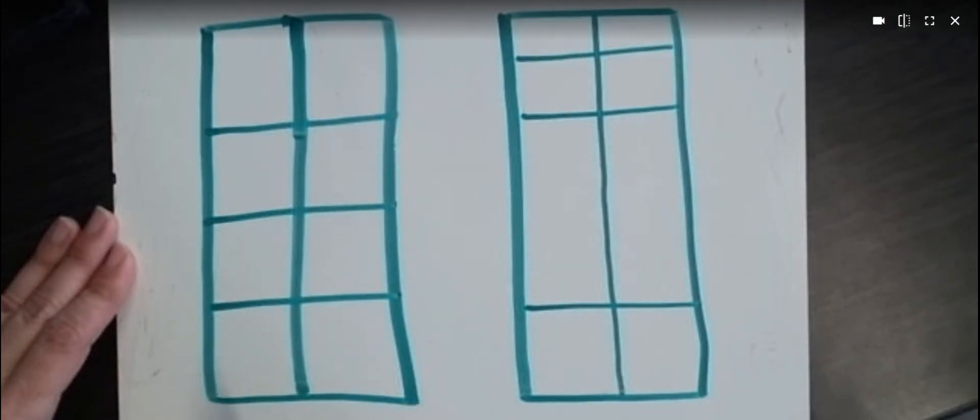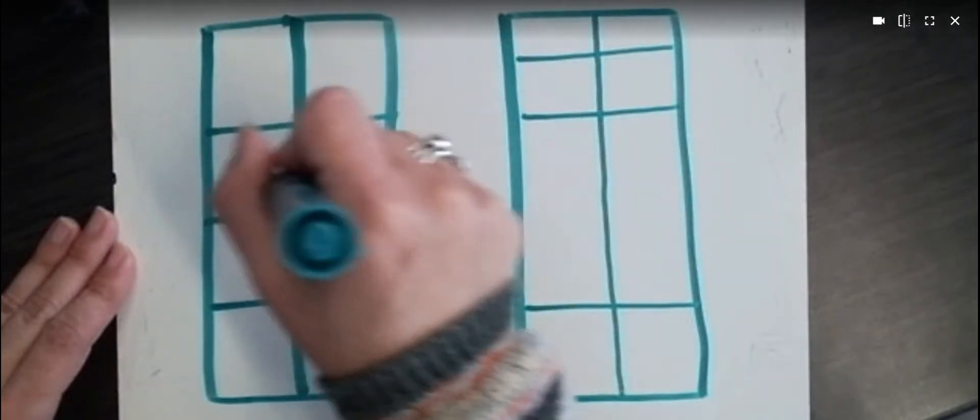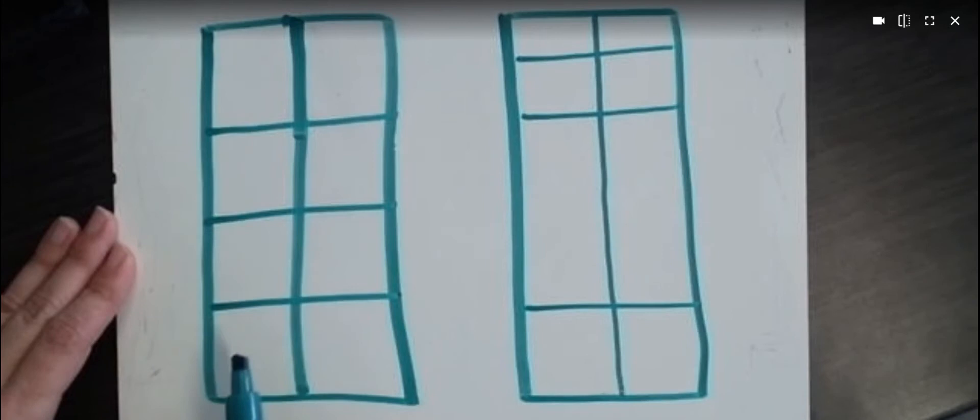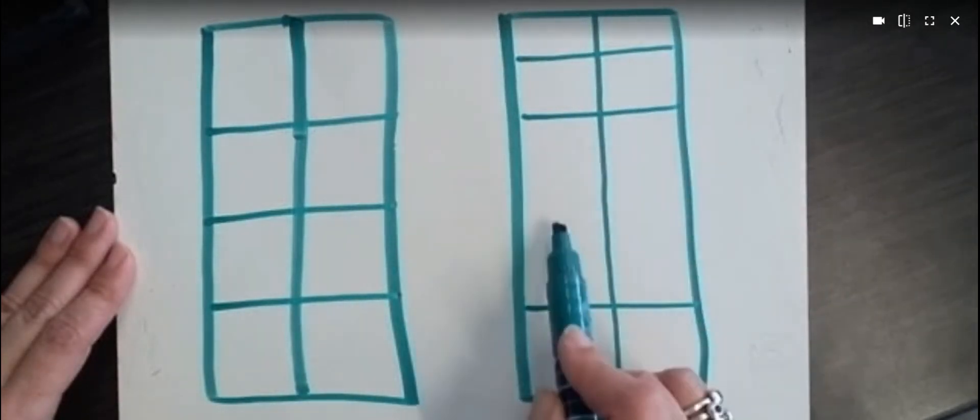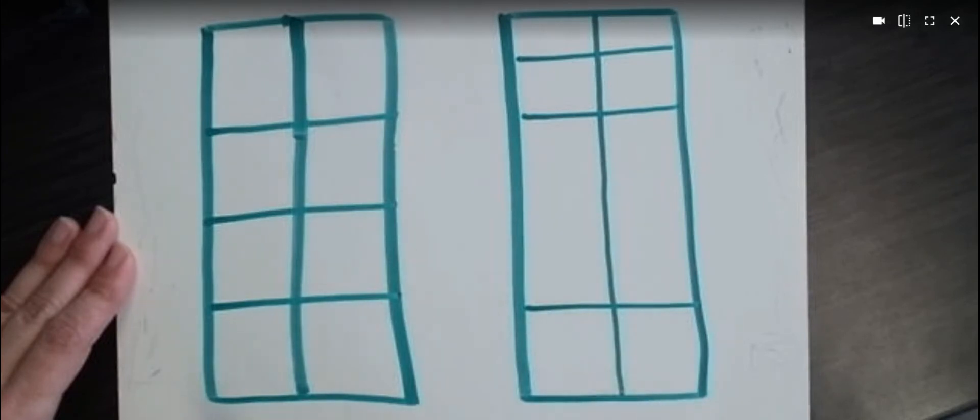Okay, now let's look at eighths. I have two rectangles, and I've divided them both into eight parts each. One, two, three, four, five, six, seven, eight. One, two, three, four, five, six, seven, eight.